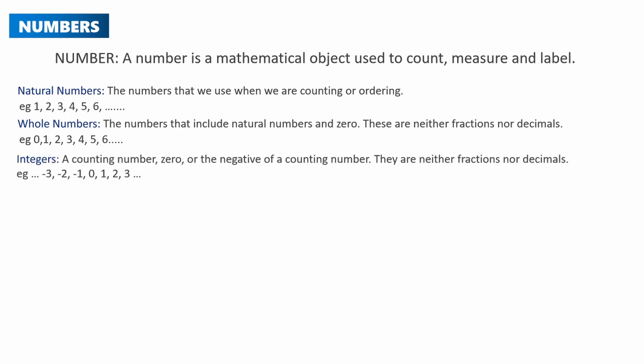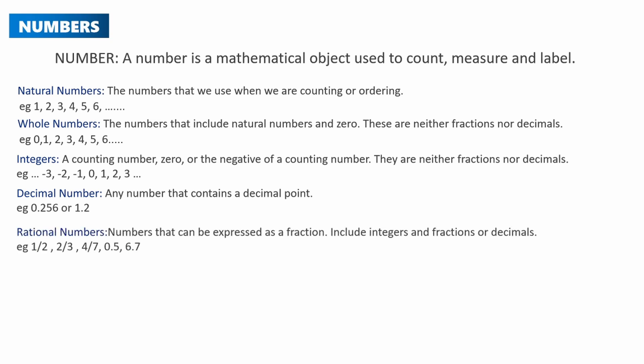An integer is a counting number, zero, or the negative of a counting number; they are neither fractions nor decimals, e.g. -3, -2, -1, 0, 1, 2, 3 and so on. Decimal numbers are any numbers that contain a decimal point, e.g. 0.256 or 1.2.